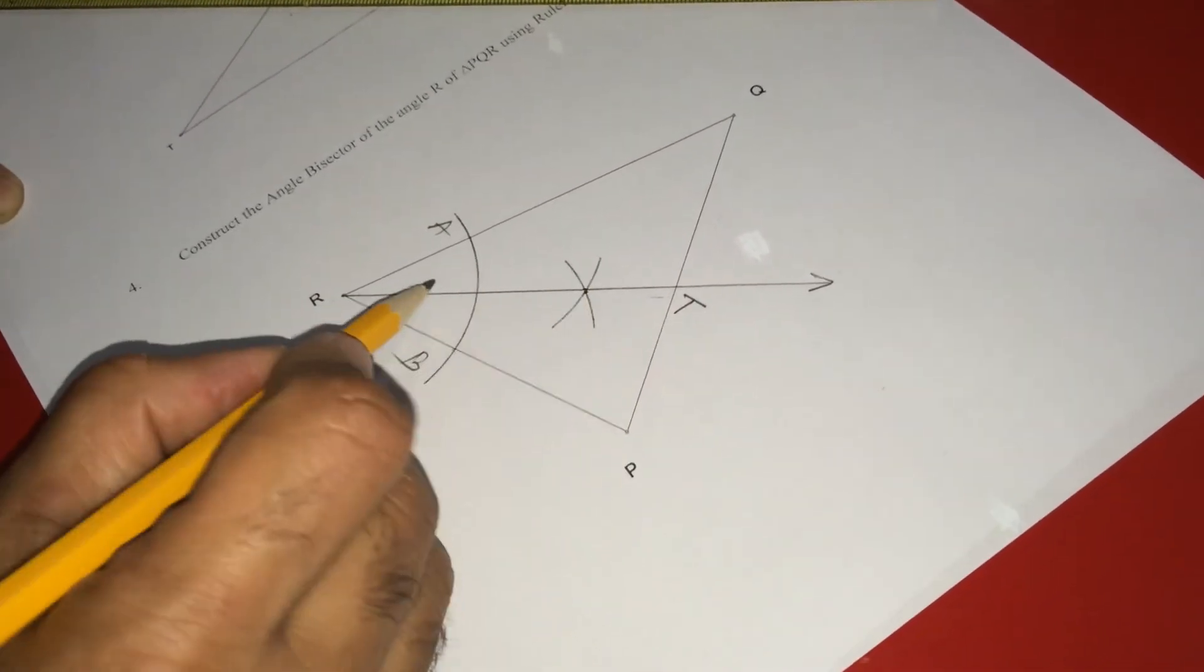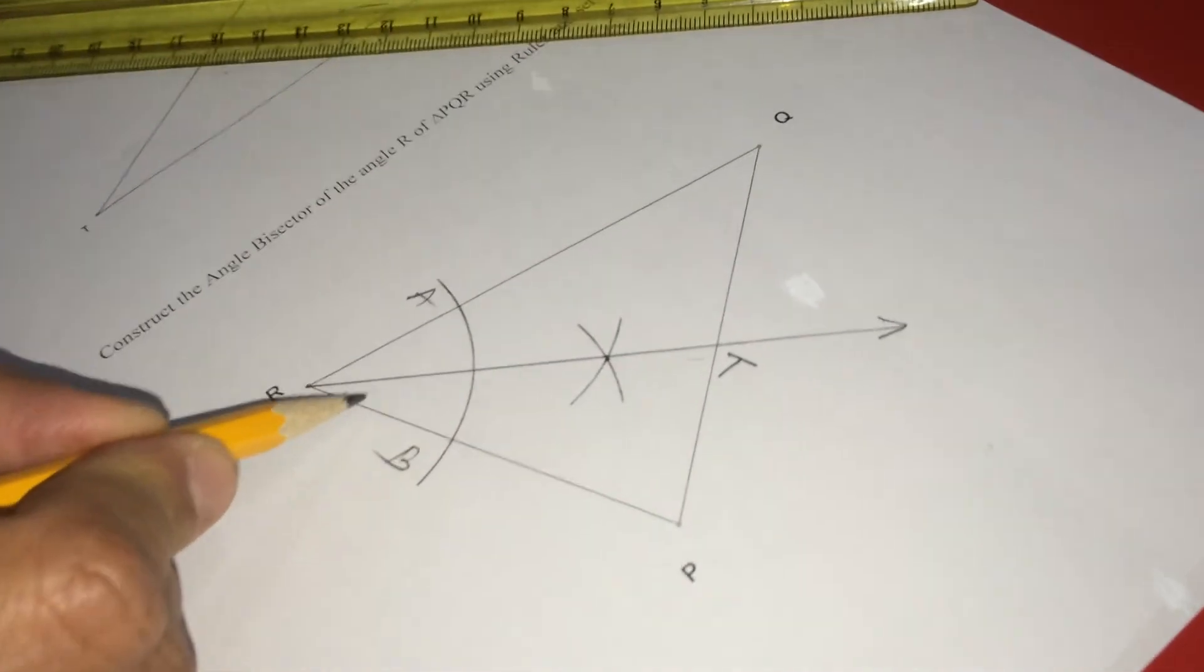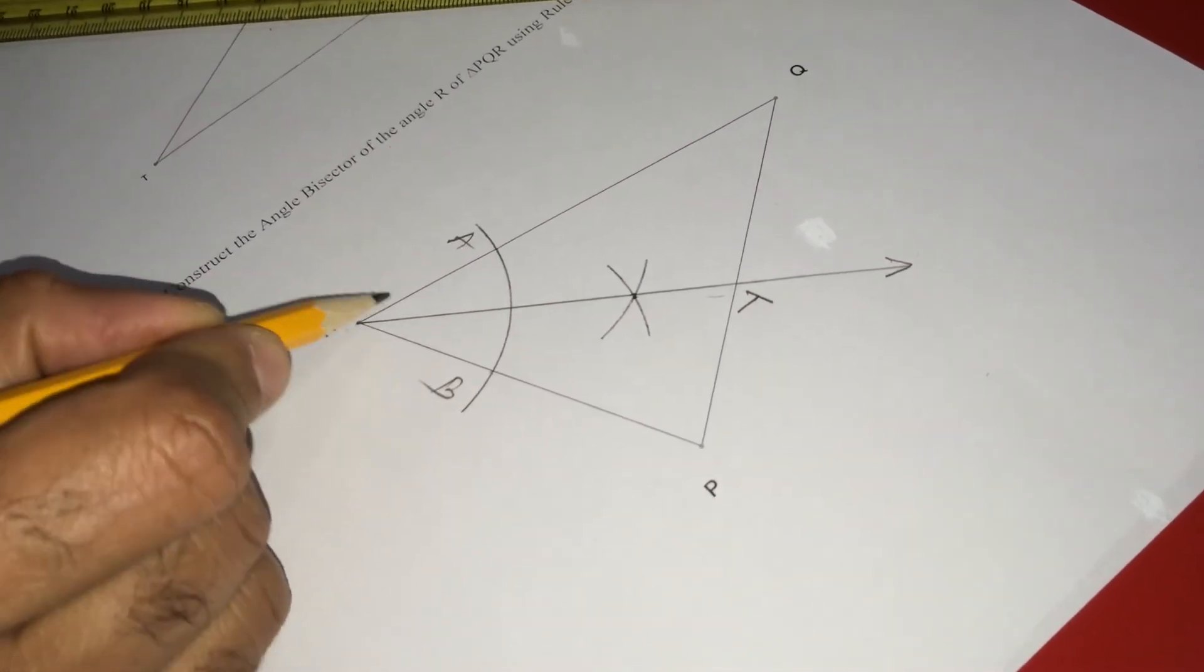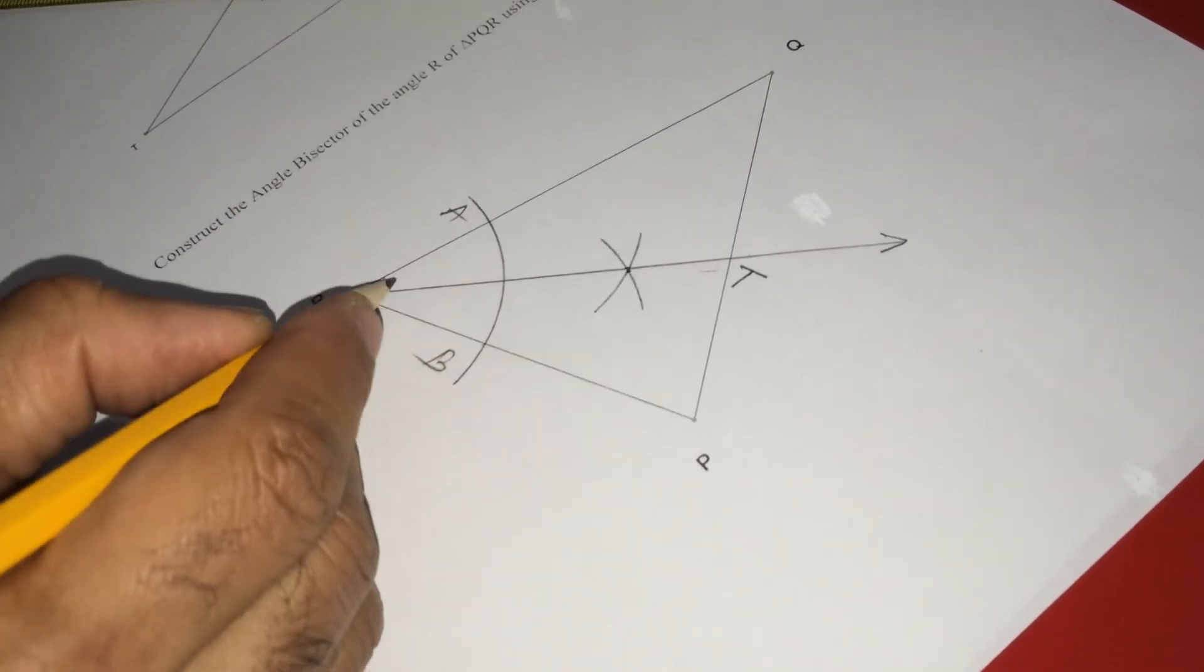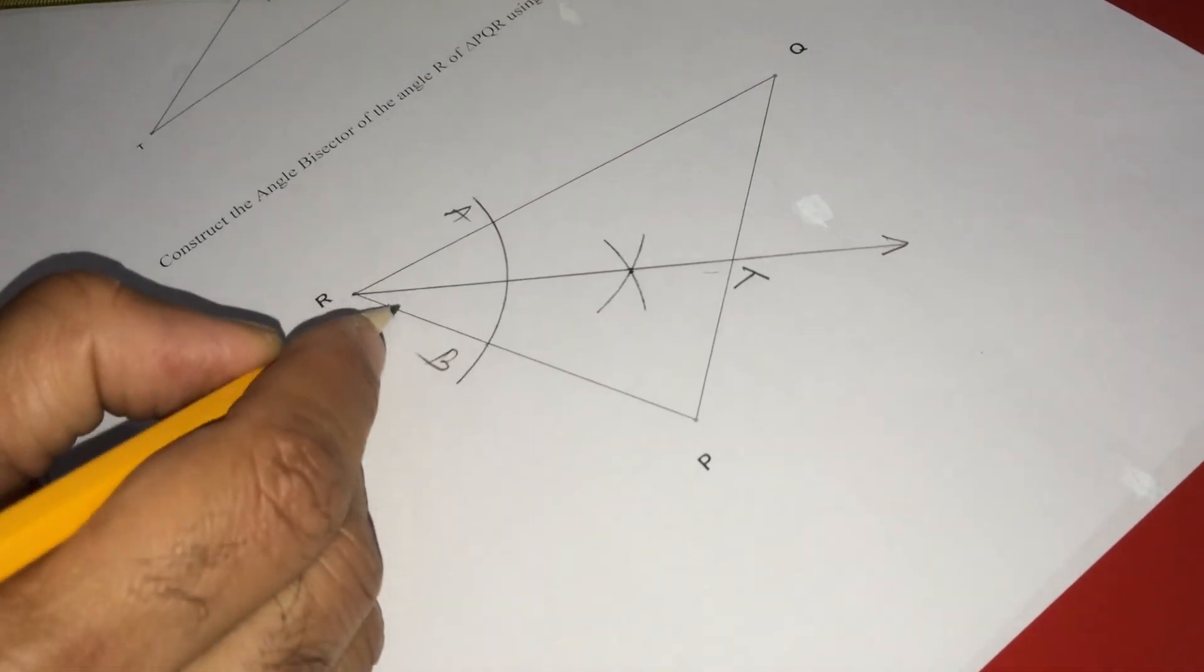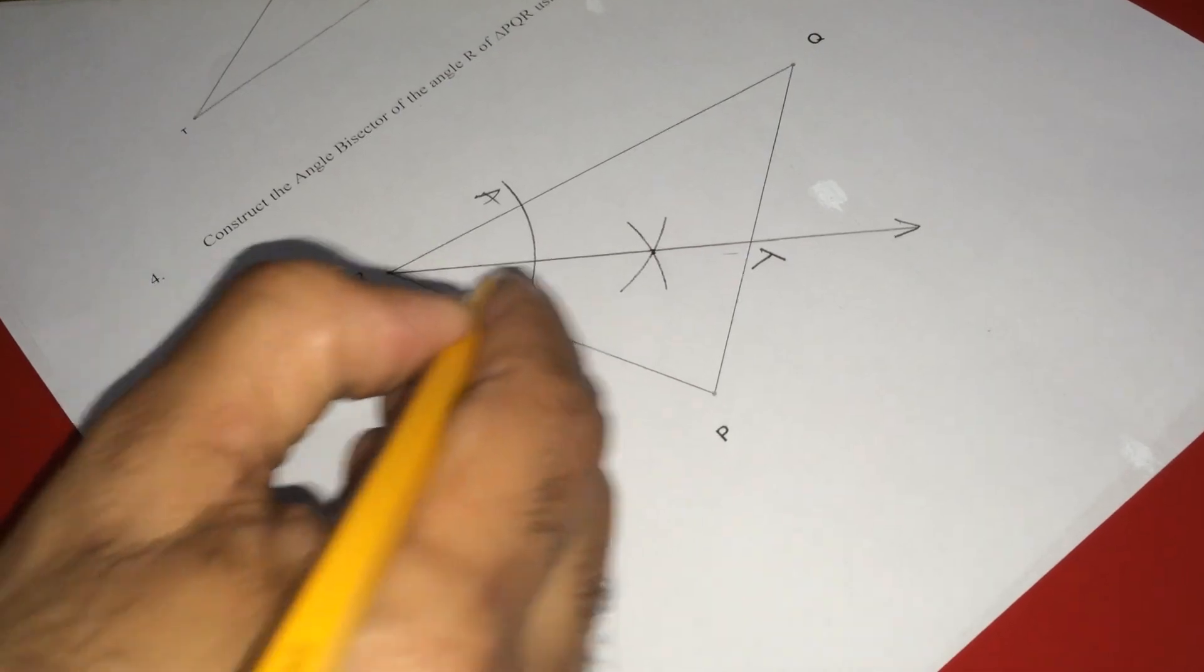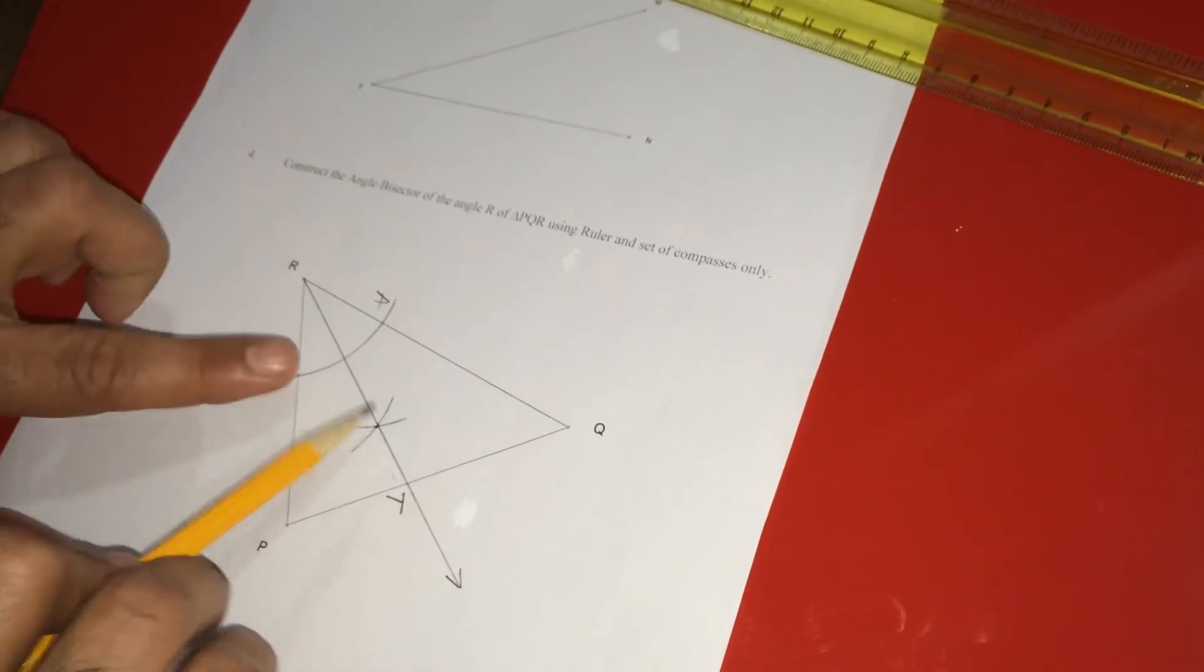So this R T is the angle bisector of this angle R. That means, suppose if it is 50 degrees, this will be 25, this will be 25. Suppose if it is 60, this will be 30 and this will be 30. That means, this line is making this total angle into two equal parts, that means it is bisecting. So that is why we call this R T as angle bisector. Like this, you have to construct the angle bisector of angle R in this procedure.